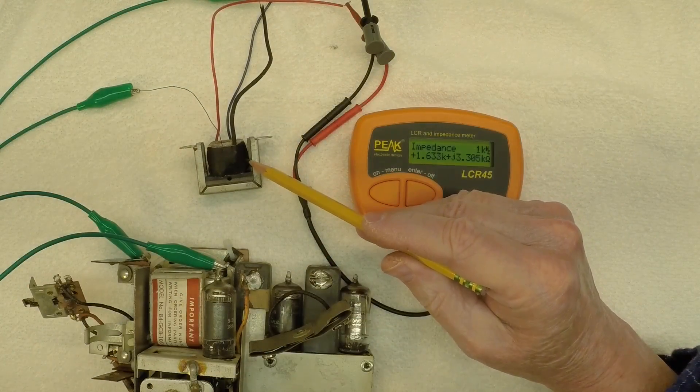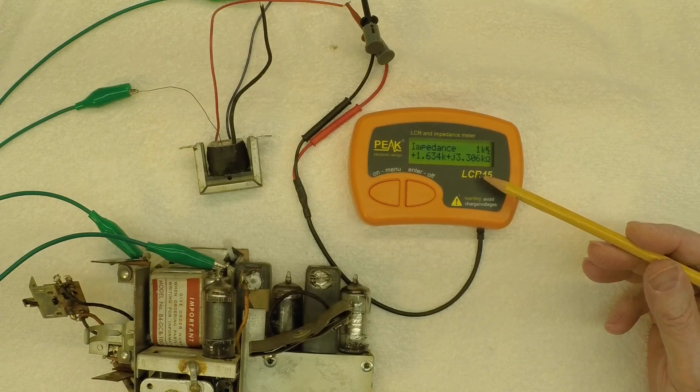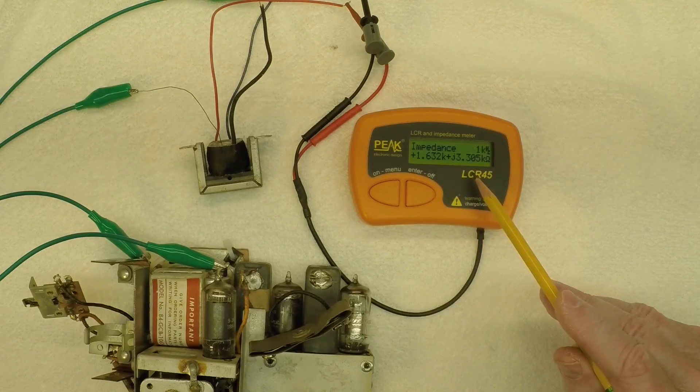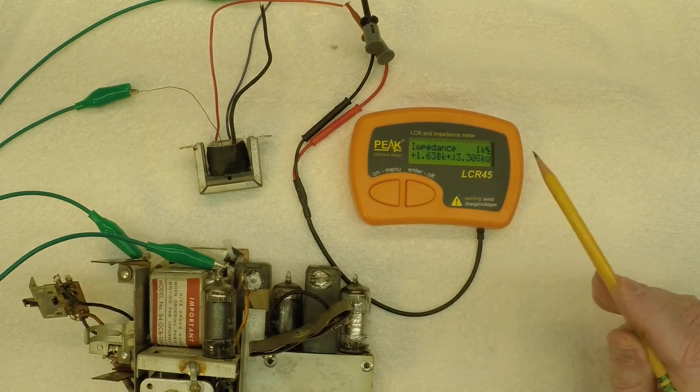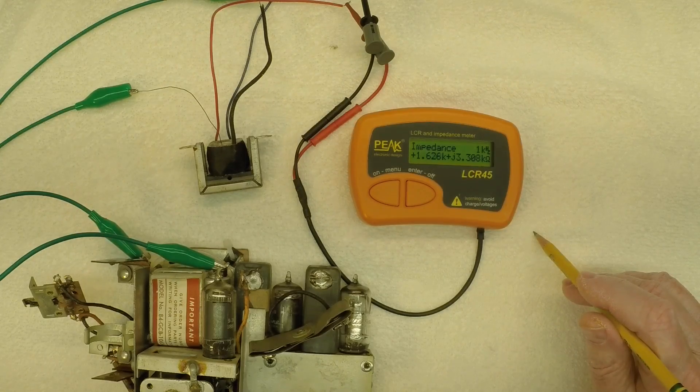After making the repair to the output transformer, you can see I'm measuring the impedance now on my little peak meter, and I'm just under 5,000 ohms in total. So that's going to be a good match for the power output tube.